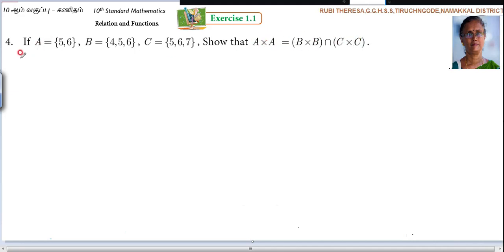First of all you should find out A cross A. A cross A, that means you have to write A set again A set because it is A cross A. I told you those who are unable to find out the path, you can write like this. This is the easy way.